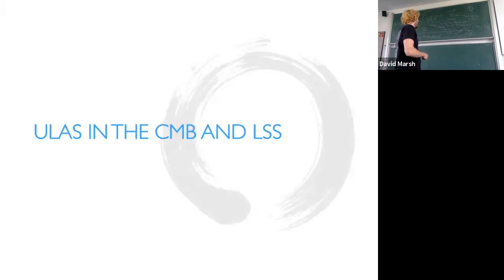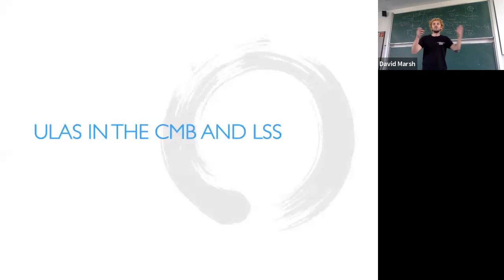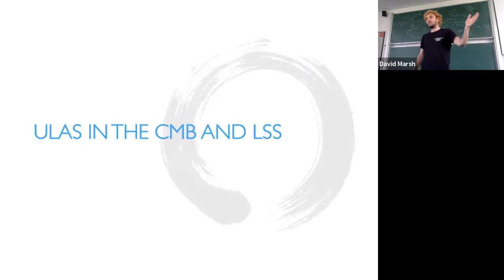This lecture we're going to use the CMB and other measures of cosmological structure to place constraints on ultralight axions, and really start to make contact with what Jens is talking about. We're going to establish 10^{-22} eV as a relevant scale — why this is consistent with the large-scale structure of the universe — and place constraints on the density of axions of lower masses.